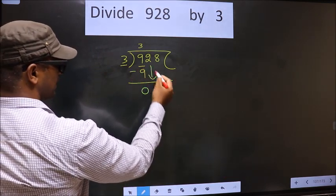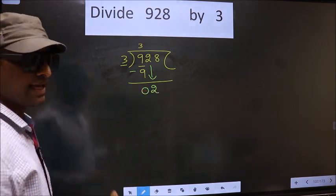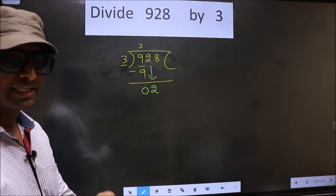Now you bring down the beside number. So 2 down. This is where the mistake happens. And the mistake is this.